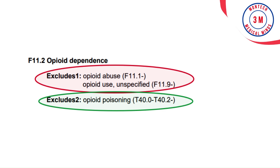Excludes 1 is a pure exclusion — both codes cannot occur together. For example, code F11.2, Opioid Dependence, has an Excludes 1 note for Opioid Abuse (F11.1) and Opioid Use (F11.9). F11.2 is opioid dependence, F11.1 is opioid abuse, and F11.9 is opioid use. These three codes cannot be assigned together; they exclude each other.